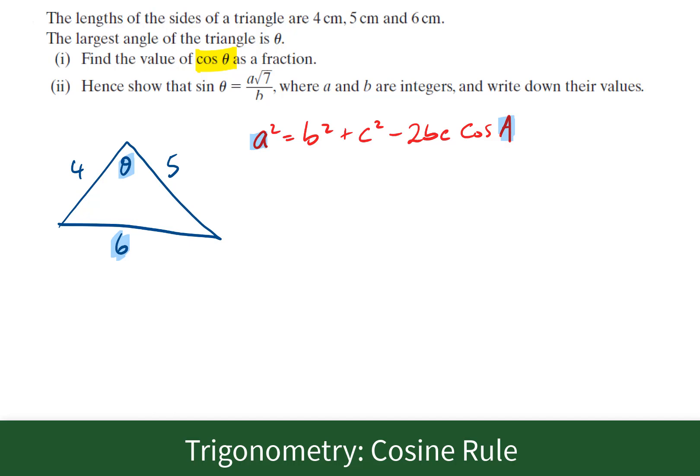I'd like to rewrite this formula before I sub things in. The important one is that 6 is going to be our a in this formula. I'm going to rewrite the formula to find what cos A would look like. If I subtract b squared and c squared from both sides, then divide both sides by the negative 2bc, that's the formula for cosine A.